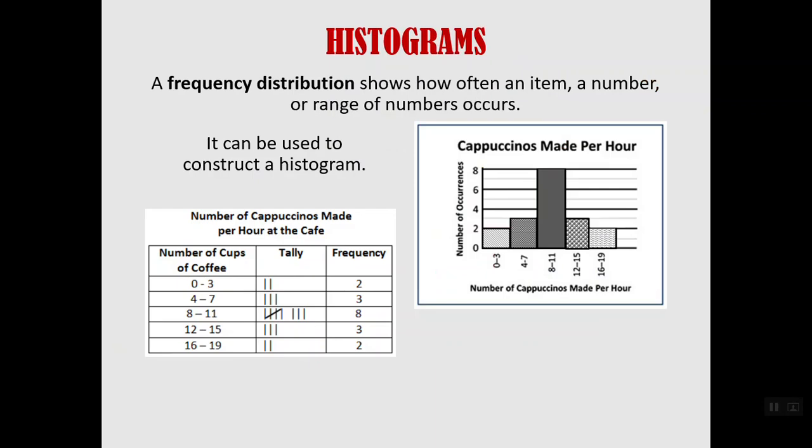A frequency distribution shown in the item on the left shows how often an item or a number or a range of numbers occurs. You can see number of cappuccinos made per hour at the cafe has a frequency distribution because they made some ranges.